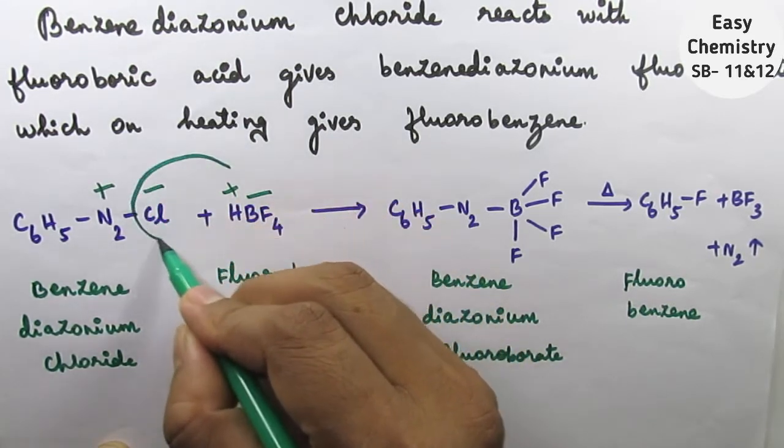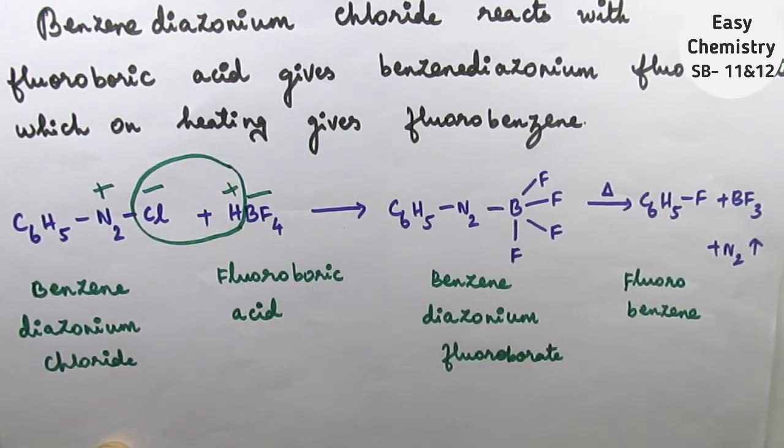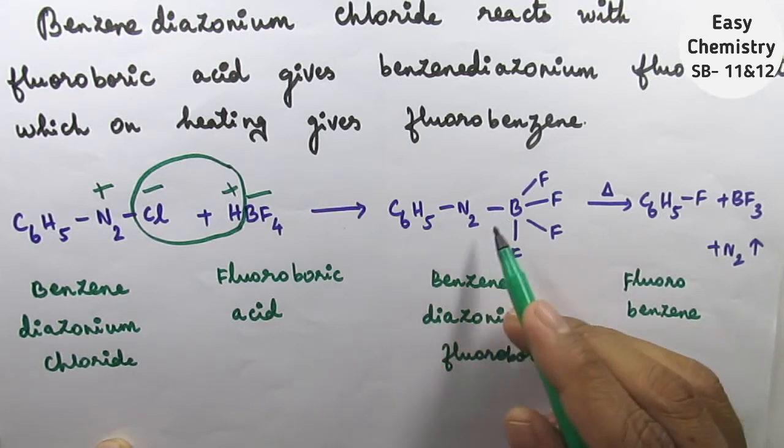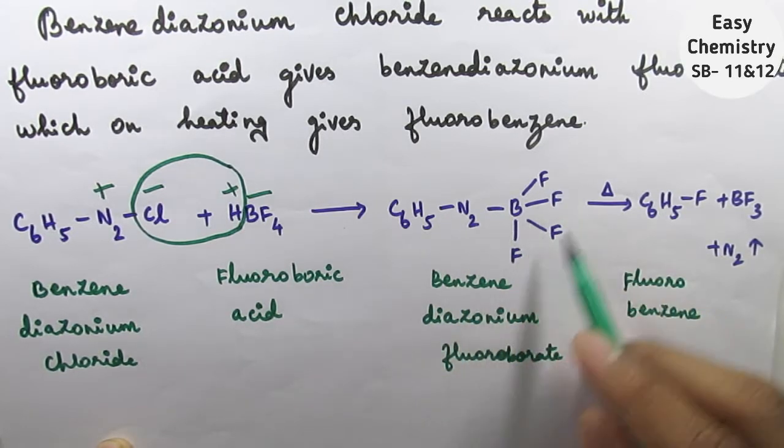So H plus Cl minus combine. C6H5 bond N2 bond BF4.